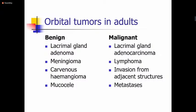Now looking at orbital tumors in adults — just like in children, they can be benign or malignant. Benign tumors include lacrimal gland adenoma, meningioma, cavernous hemangioma, and mucoceles. Malignant ones include lacrimal gland adenocarcinoma, lymphoma, invasion from adjacent structures, and metastasis from other areas of the body. The commonest primary sites for metastasis to the orbit differ by sex: in males it is usually lung cancer, and in females it is mainly breast cancer.